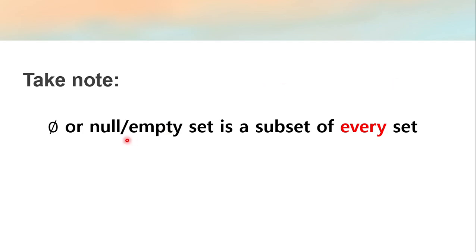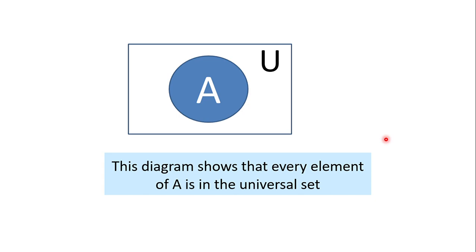Take note that a null or empty set is a subset of every set. So if we have set A = {1}, the subsets are the empty set and {1}. There is always an empty set as a subset in every set. The diagram shows that every element of A is contained within the universal set.